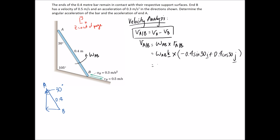Expanding this out, we get negative 0.2 omega AB, and K times I — remembering from the diagram that K times I is in the direction of the arrow, so it's positive — giving a J on the end. Then omega times 0.4 cos 30, which is 0.346, and K times J gives negative I.